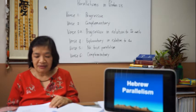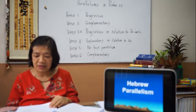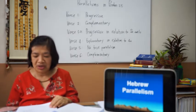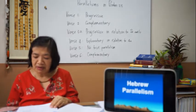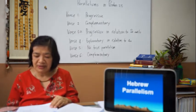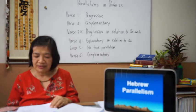Number three is antithetic parallelism: two lines or terms correspond but are in opposition to each other. For example: 'The memory of the righteous is blessed, but the name of the wicked is rotten.'